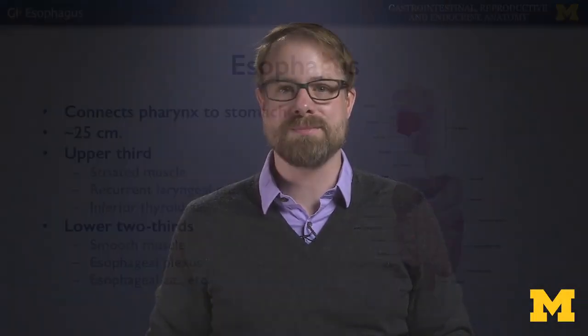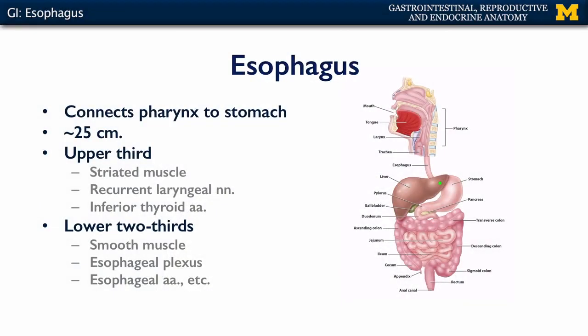Let's talk about your esophagus, the intended pathway for food to proceed through to the digestive system. The esophagus is a fibromuscular tube that connects the pharynx to the stomach, moving through the neck and the thorax down into the abdomen.